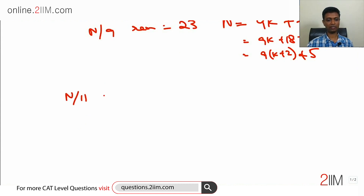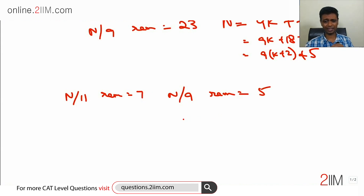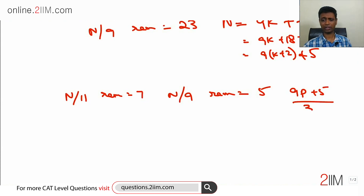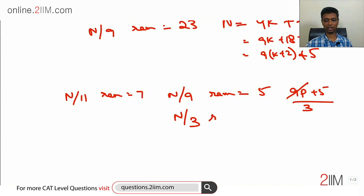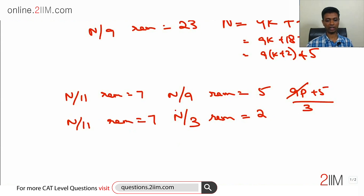So now we know: n÷11 remainder is 7, and n÷9 remainder is 5. Remember, we don't need n÷9 — we need n÷3. If n÷9 remainder is 5, then n = 9p + 5. Dividing by 3: 9p÷3 has no remainder, and 5÷3 gives remainder 2. So n÷9 remainder = 5 tells us that n÷3 remainder is 2.